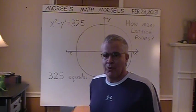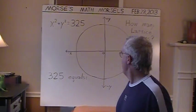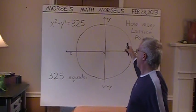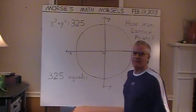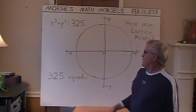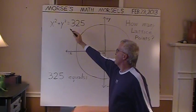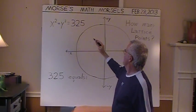Hello and welcome to Morse's Math Morsels. Here we have a graph of a circle whose equation is x squared plus y squared equals 325.